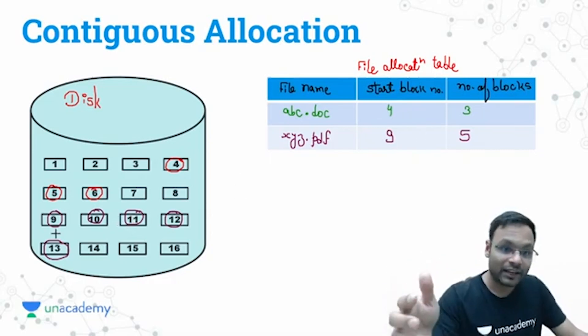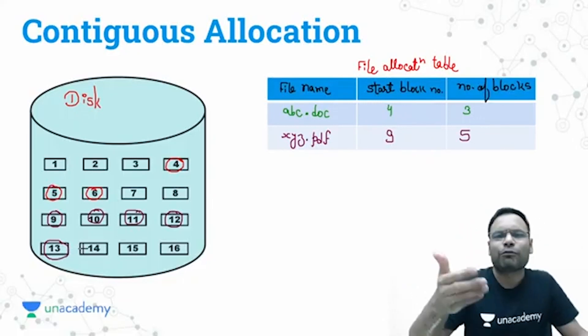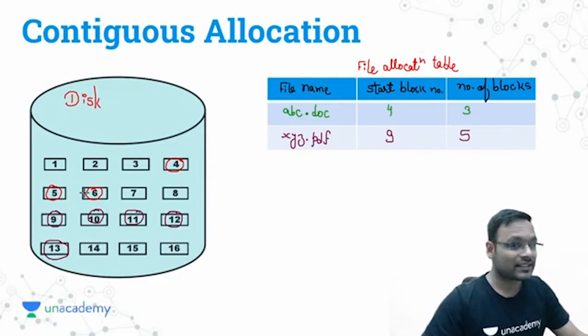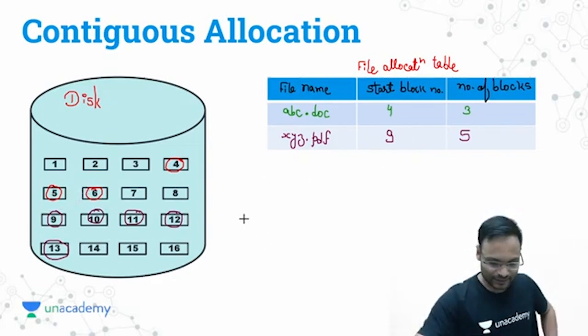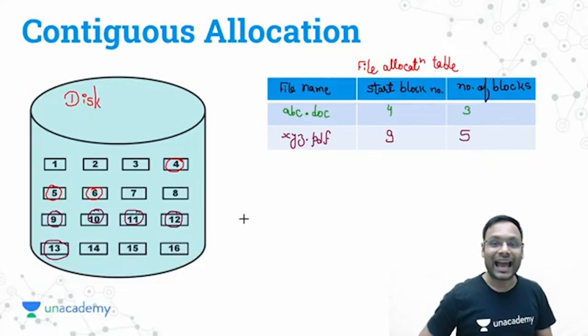And of course, I can access it sequentially also. How? If I want to access entire file sequentially, first ninth block, then 10, 11, 12, 13—easily I can access. So we will be having both types of access possible in this contiguous allocation.